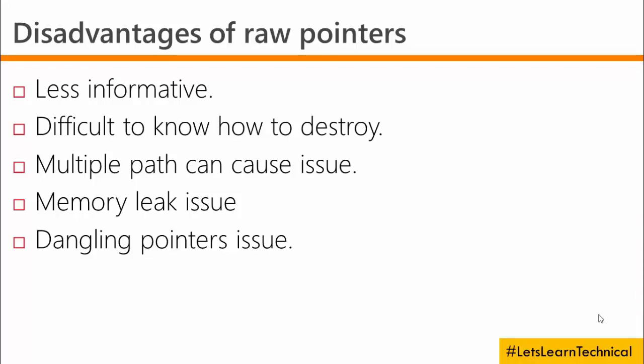Raw pointers are less informative. Their declaration doesn't indicate whether the pointer points to a single object or to an array. It is also difficult to know how to destroy what the pointer points to — the declaration reveals nothing about whether you should destroy what it points to when you are done using it.